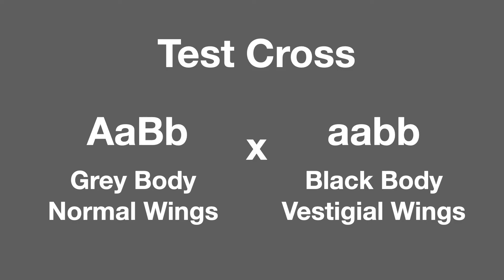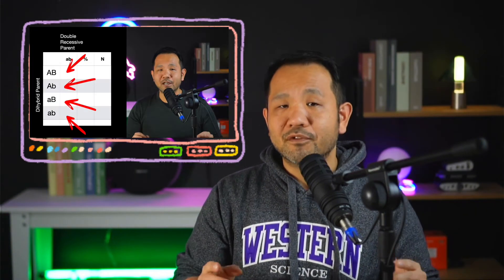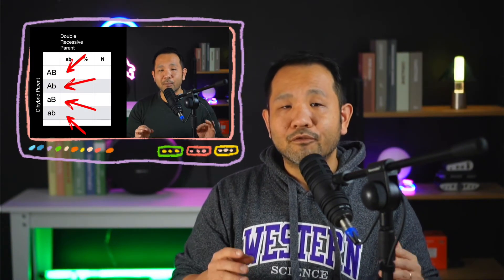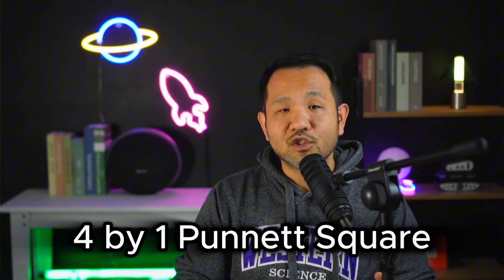To demonstrate linkage mapping, I will be doing a test cross. This test cross will be between a double heterozygous individual — who appears to have a gray body and normal wings — against the double mutant, which has a black body with vestigial wings. Just as we demonstrated in our previous video, this type of cross yields a 4x1 Punnett square.